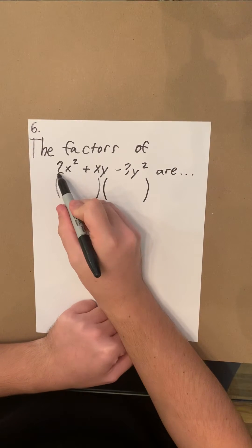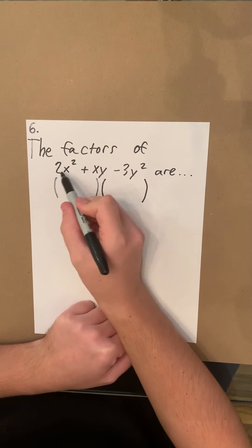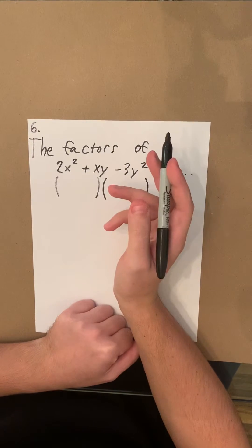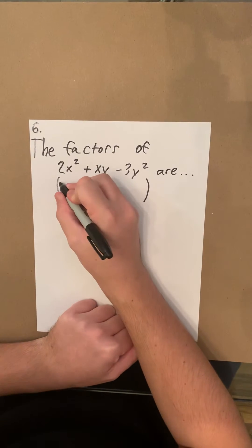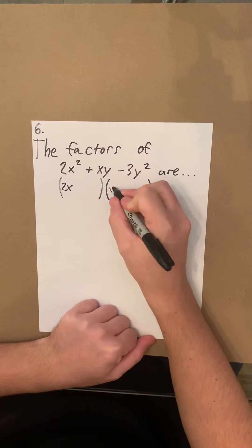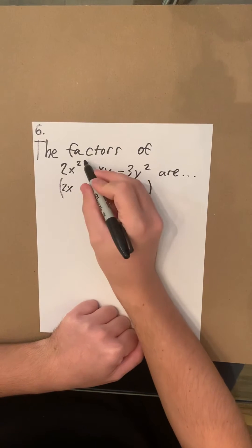We're going to look at the first term, 2x². What multiplies together to make 2x²? Since 2 is a prime number, we're going to have 2x here and x here. When you multiply those together, you get 2x².